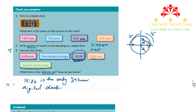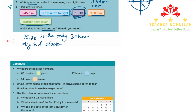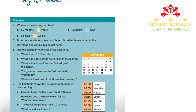Let's move to question four. It says: what are the missing numbers? Part A is: 16 months equals how many years? We know that one year is equal to 12 months.